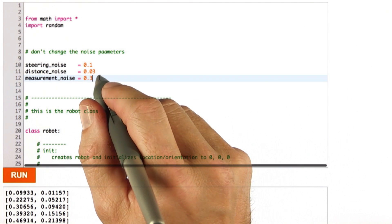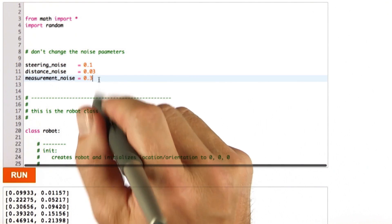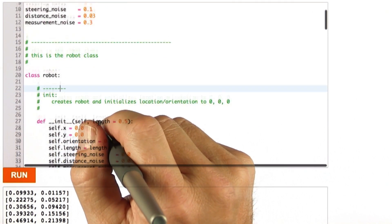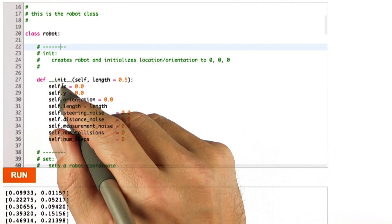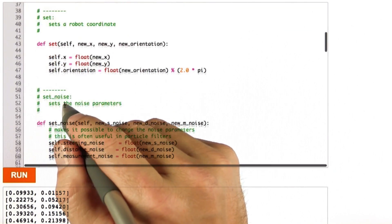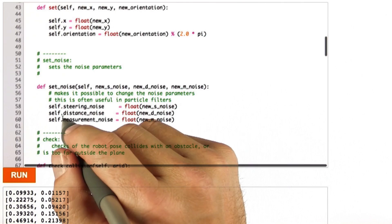We have a class robot that has certain kind of noise characteristics you can find over here. And as I scroll down, you can see the familiar init function, the position setting function, the setNoise function.